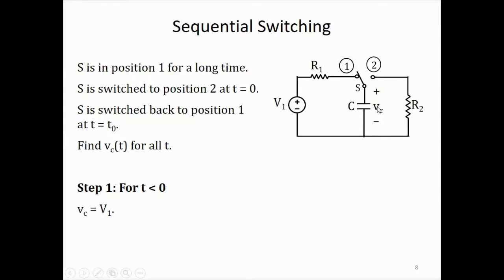We use all our knowledge to solve this. For T less than 0, we focus on VC — its initial condition, final condition, etc. For T < 0, the switch was in position 1, so the capacitor was fully charged to voltage V1. Therefore, the capacitor voltage was V1 for T less than 0.